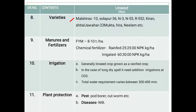Manures and fertilizers: FYM at 8 to 10 tonnes per hectare. Chemical fertilizers — for rainfed conditions, NPK at 25:25:0 kg per hectare. For irrigated conditions, NPK at 60:30:0 kg per hectare. The whole fertilizer dose can be distributed in different split doses.